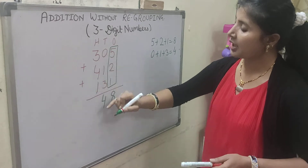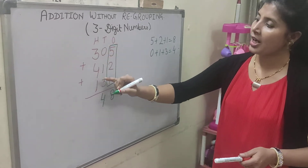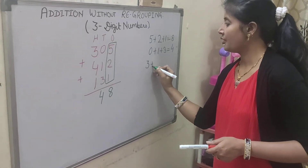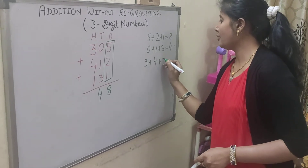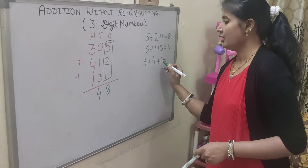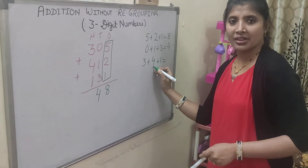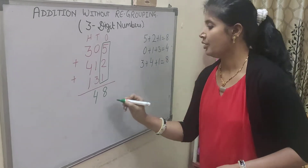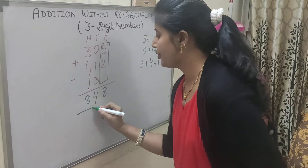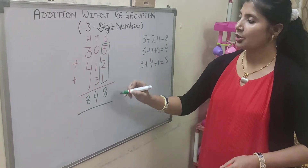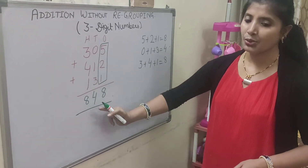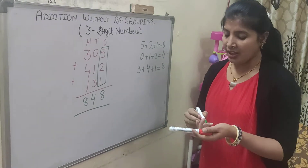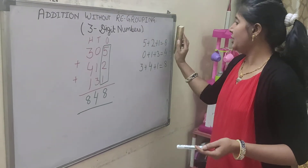At last we have to add the 100s place digits. We have 3, then 4 and 1. Now 3 plus 4 is 7, and 7 plus 1 is 8. So write 8 here. The total number of fruits is 848.